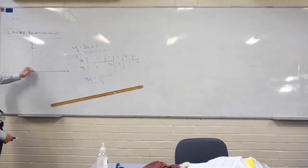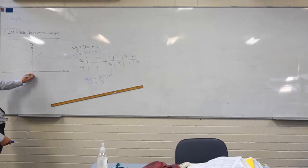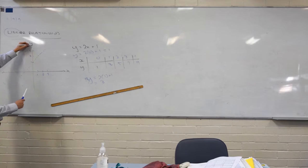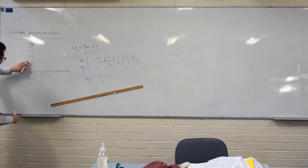Let's go plot them out. 0, 1, 1, 3, 2, 5, and then 3, 7. Yours will be a lot neater than mine. There we go. Plot them out for me, see what they look like. Let's see if it is actually that line.